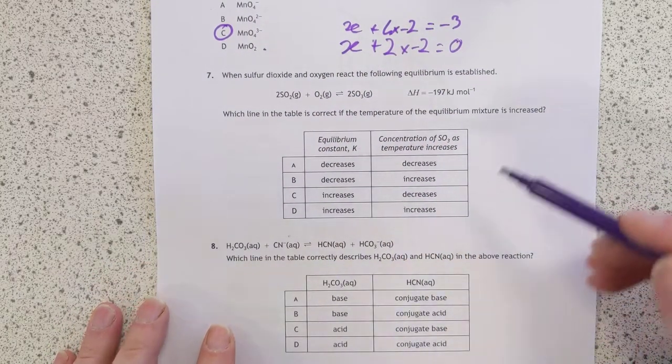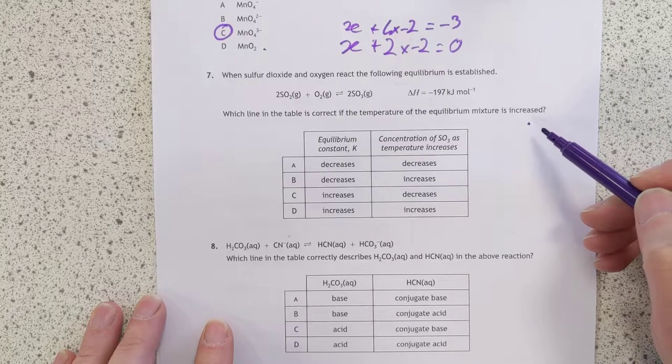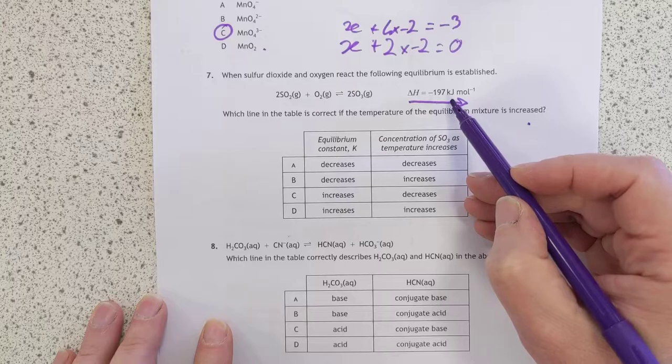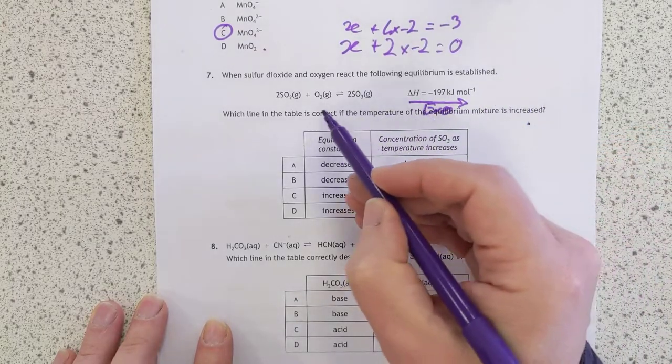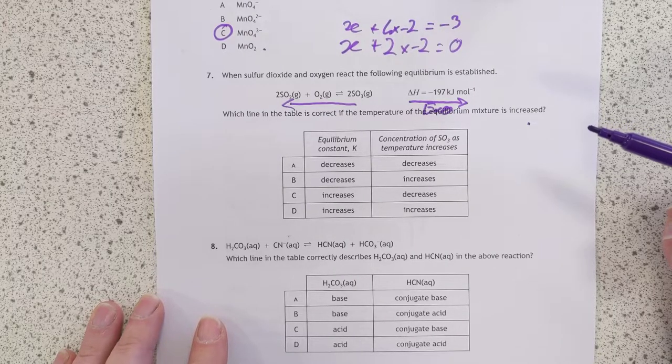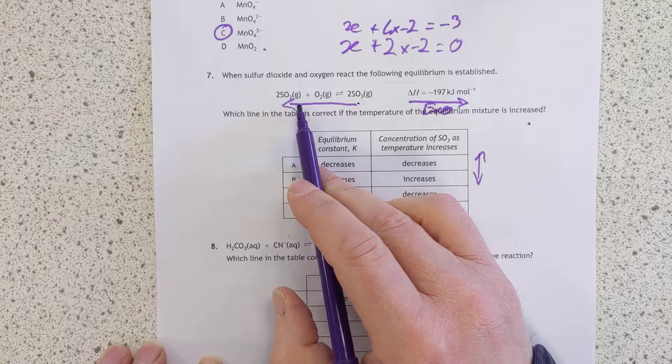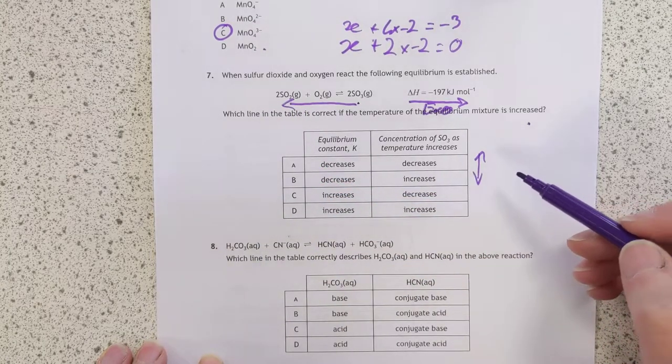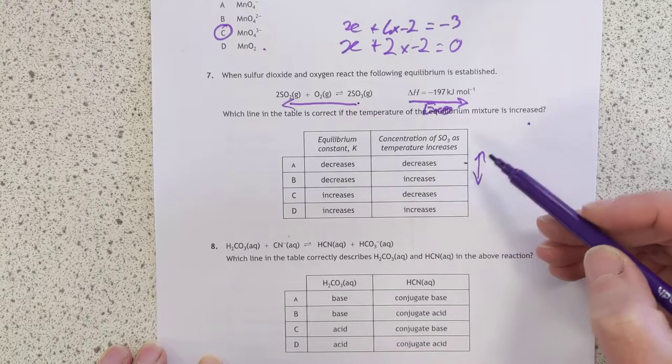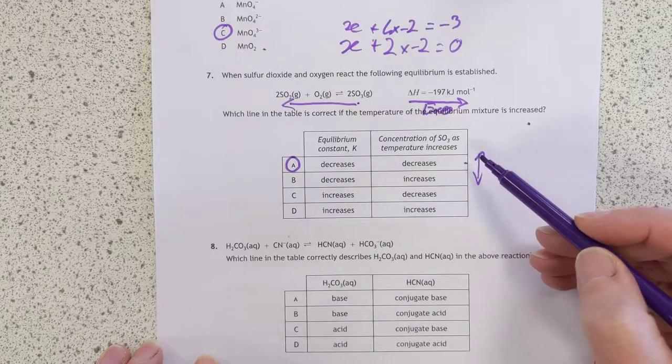Number seven, you've got an equilibrium. Which line on the table is correct if the temperature of the equilibrium mixture is increased? Right. The delta H is for the left to right reaction and it is exothermic, which means if you crank up the temperature, this equilibrium is going to go to the left because that's the endothermic direction, which means the K number is going to decrease because you're going to drop the right-hand side concentration and increase the left-hand side concentration, which means K will decrease concentration of SO3 as temperature increases. It's just going to be decreased as well. So I'm tempted to go with A. Simple as that.